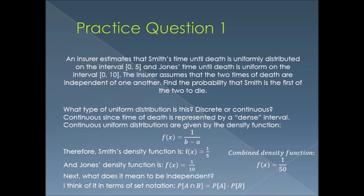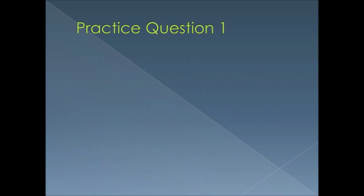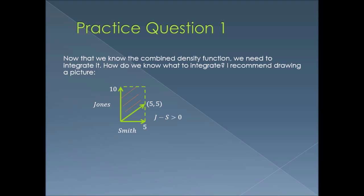Now that we have all this information, we want to integrate the region — but what region are we dealing with? I like to draw out a picture. The x-axis is represented by Smith and the y-axis by Jones. The endpoints represent their maximum time of death: Jones is destined to die within 10 years, and Smith within 5 years.